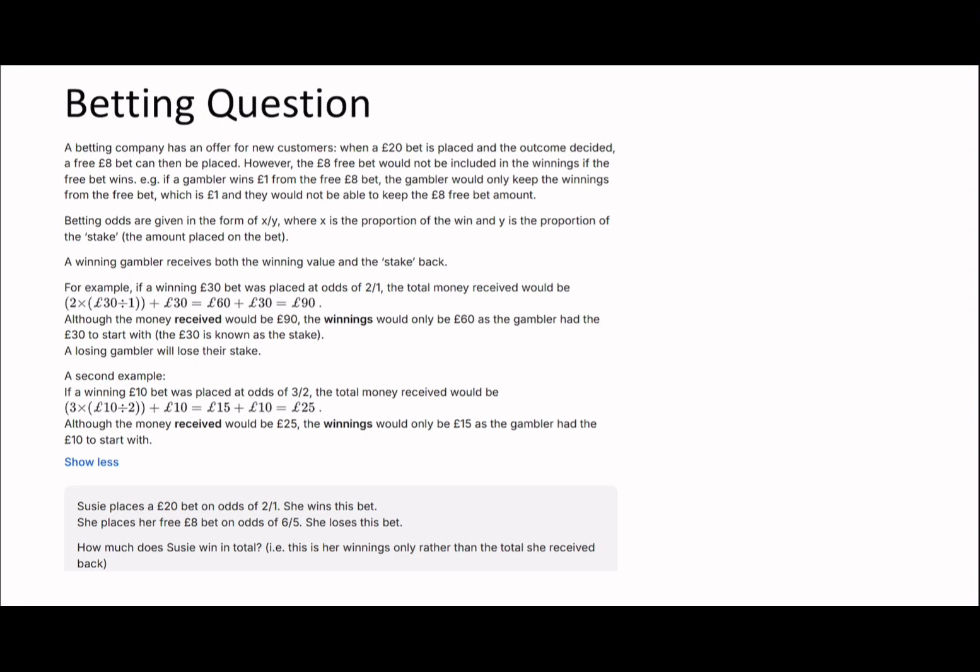Betting odds are given in the form of x over y, where x is the proportion of the win and y is the proportion of the stake. A winning gambler receives both the winning value back and the stake back.